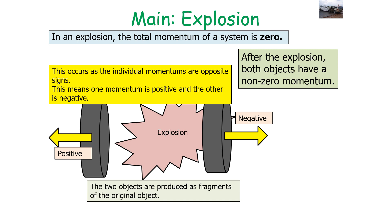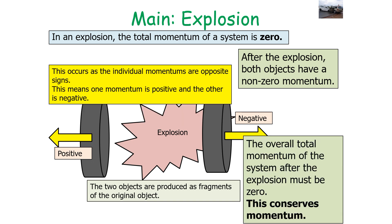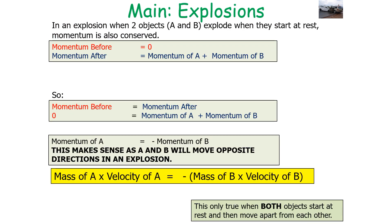This occurs because the individual momenta are opposite signs of each other — one is positive and the other is negative — because the two fragments are moving in opposite directions. Adding them up equals zero, conserving momentum. For example: +20 kg·m/s + (−20 kg·m/s) = 0 kg·m/s. Therefore, momentum of A equals minus the momentum of B, which we can use to work out the mass and velocity of the objects.